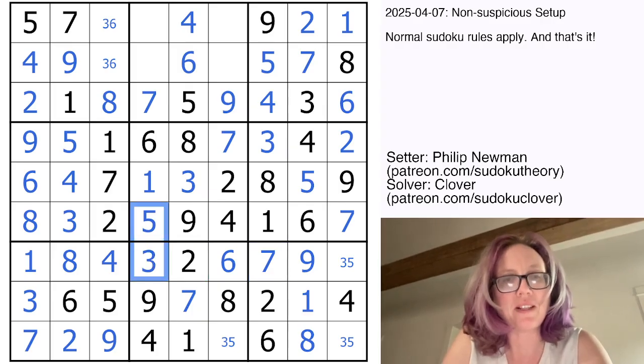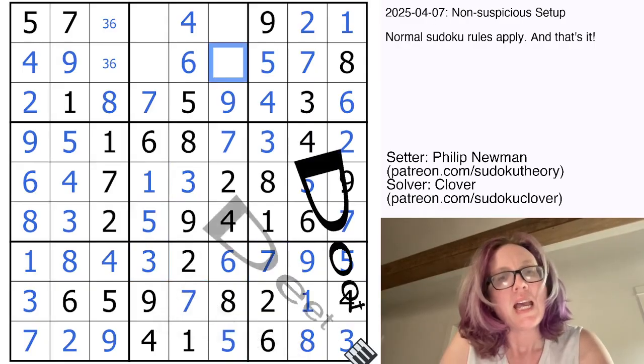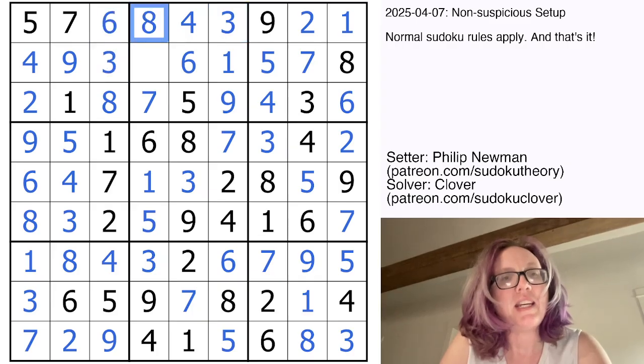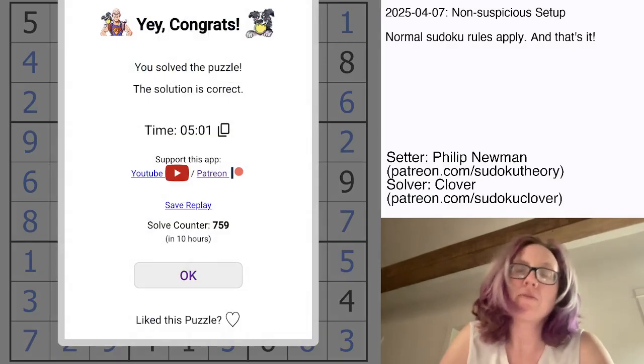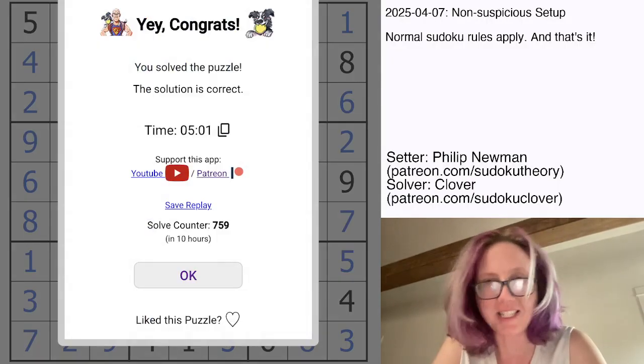We have 5 in this column, so we now know which way around these 3s and 5s go. Here I'm going to need a 1 and a 3 and a 6 and an 8. And my very last digit in the puzzle is going to be a 2. And that is how you solve Philip Newman's Non-Suspicious Setup.